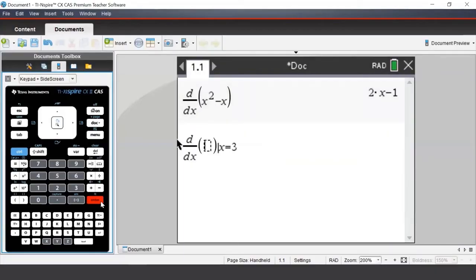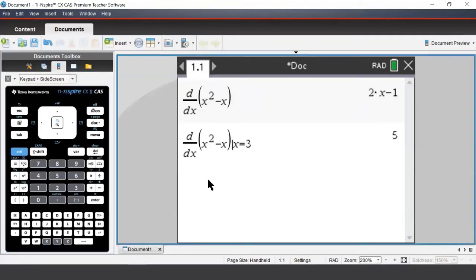We now need to enter an expression we will differentiate. And again, we'll enter in x squared minus x and press Enter. The TI Inspire reads the input as the derivative of x squared minus x, with respect to x, and then substitutes in x equals 3.